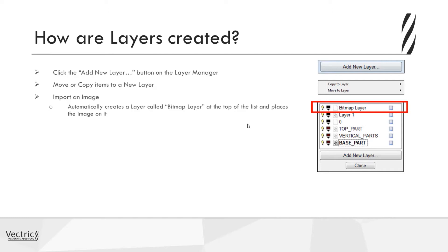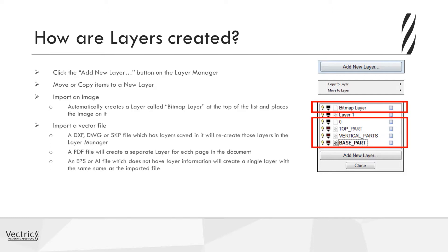When you import a vector file — for example a DXF, DWG, or SKP file that has layers saved in it — the software will recreate those layers within the layer manager to match the original. If you import a PDF, it will create a separate layer for each page within the document. For EPS or AI files, which have no layer information, the software will create a single layer with the same name as the imported file.